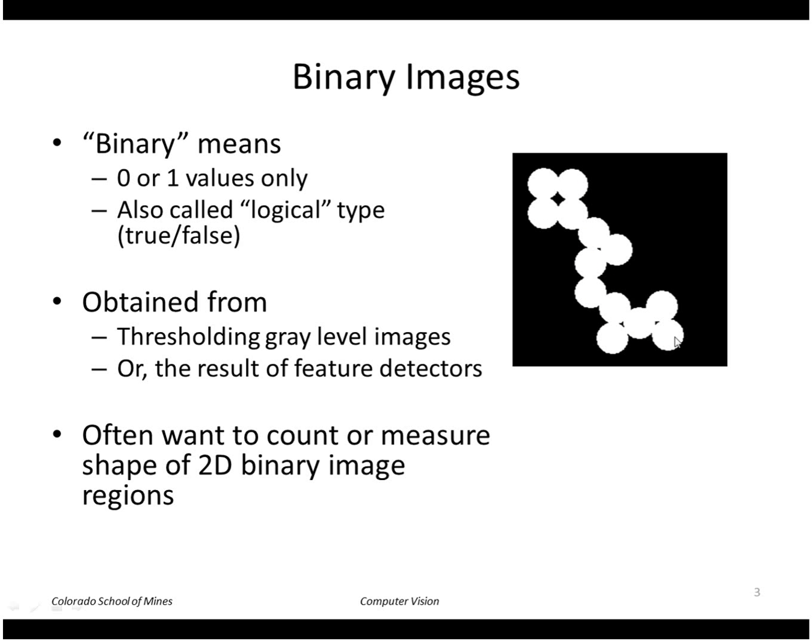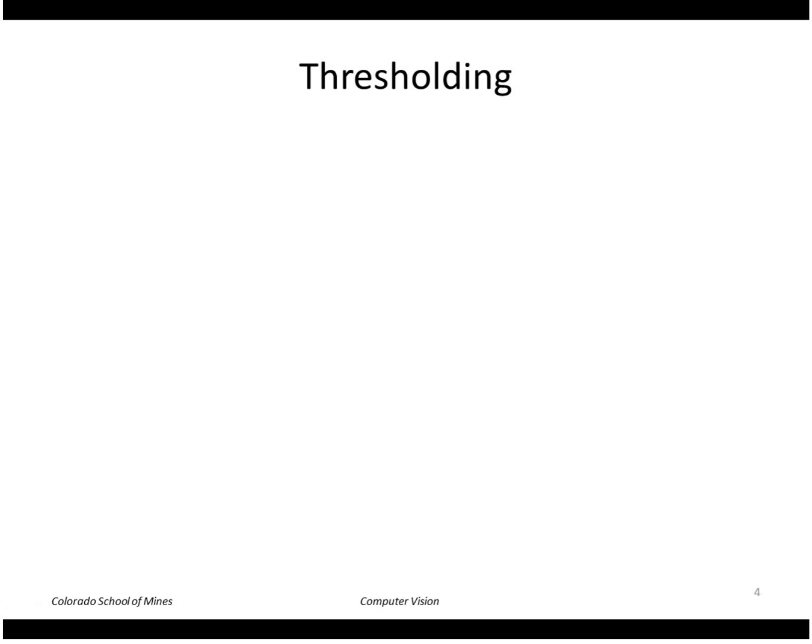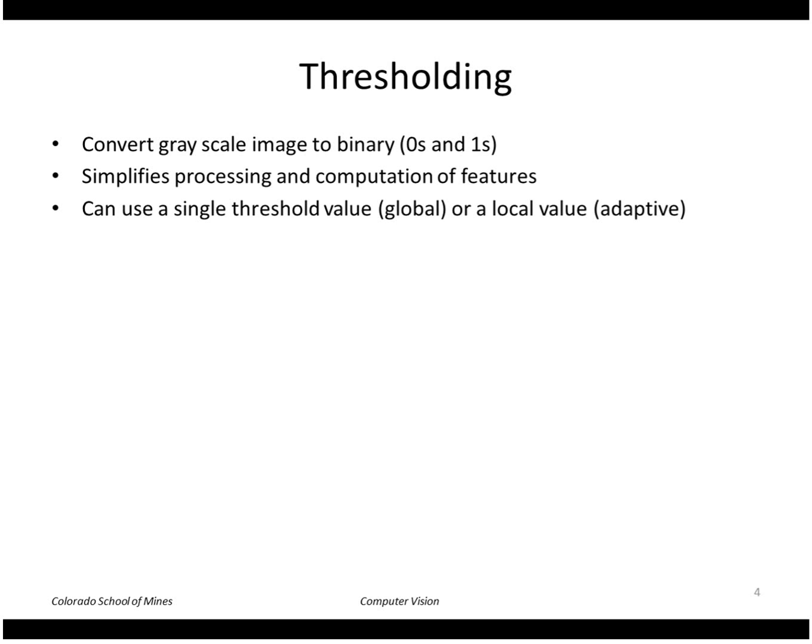Let's first look at thresholding as a way of getting binary images. In thresholding we can use a single threshold for the whole image, a global threshold, or we can do some kind of local or adaptive thresholding.